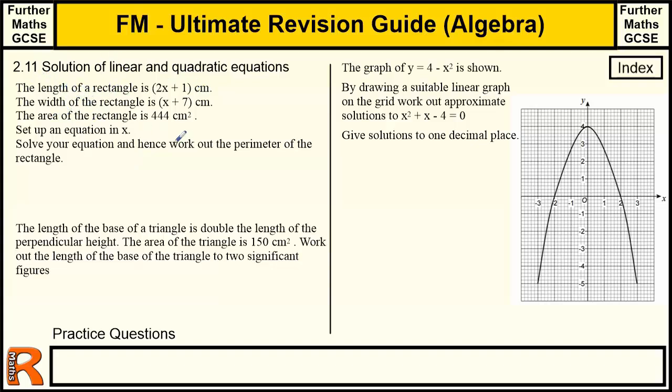So here we have the length and width and an area. So we know length times width is an area of a rectangle. So we've got to form an equation and solve it to find the perimeter. So we need to find what x is, then we can find the length, and then we can add them all together to get the perimeter.